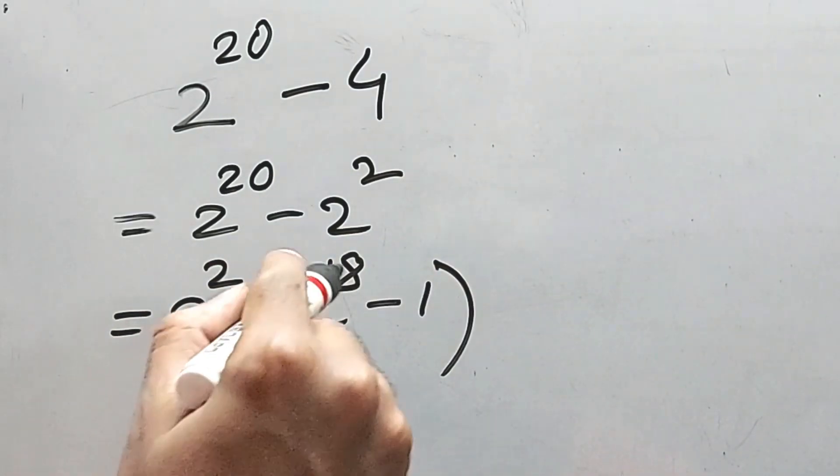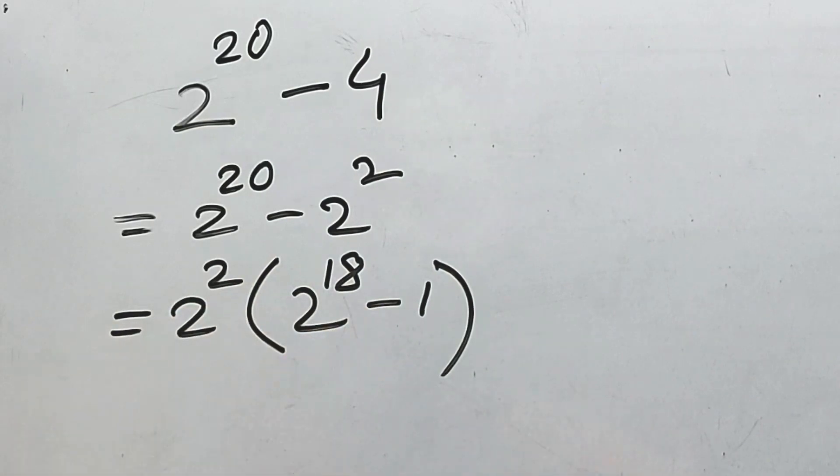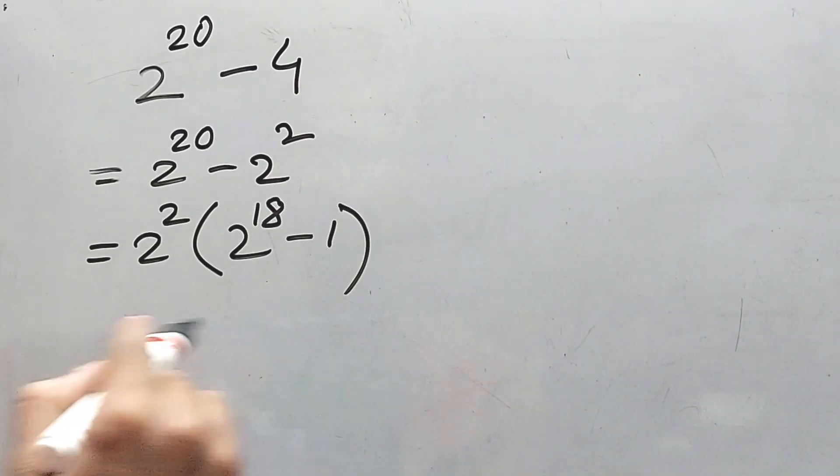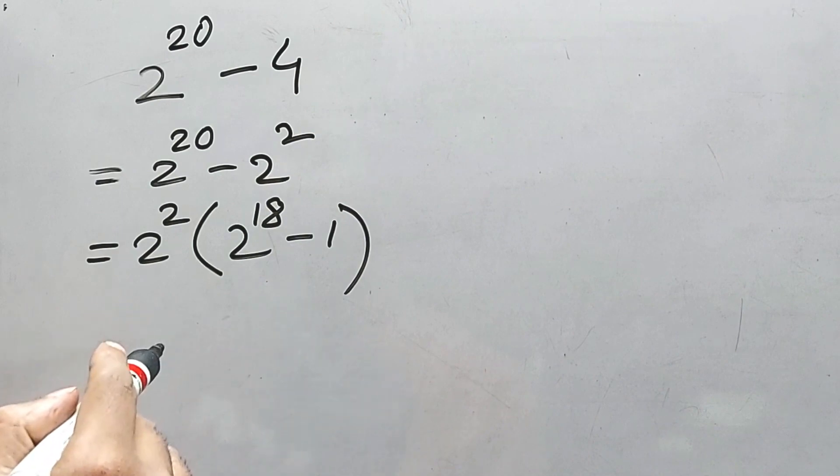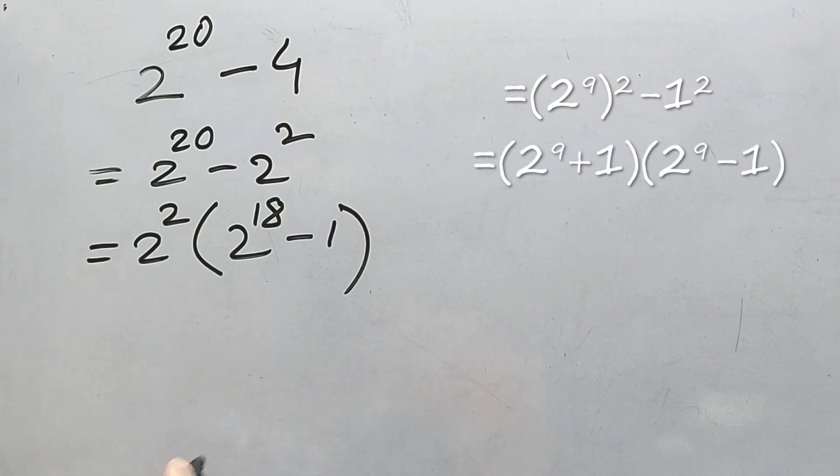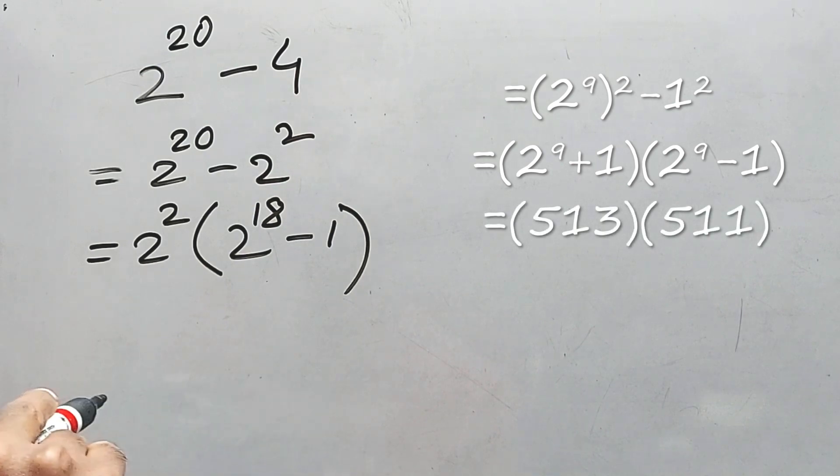Now we know the value of 2 to the power 18 minus 1, right? Because we have already solved it. If you haven't seen, please check in the i button. But this process will be a bit lengthy because again we have to find for 2 to the power 9 whole square minus 1 square, that means 2 to the power 9 plus 1 into 2 to the power 9 minus 1.